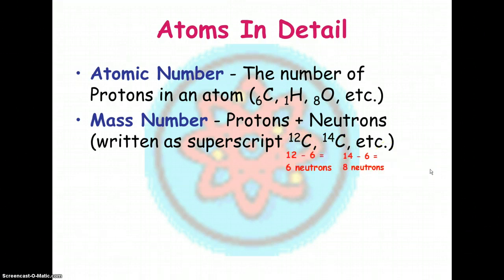You can see the difference between them here. Since carbon always has six protons, carbon 12, if we subtract 12 minus 6, has six neutrons. Carbon 14, on the other hand, has eight neutrons.